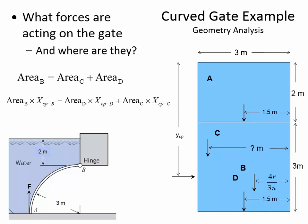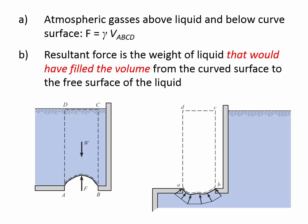One final concept: if water isn't above a curved surface but is pushing from underneath, you find the weight of the water that would be above it up to the water line — essentially the weight of the volume displaced by the gate. The upward hydrostatic force equals the weight of the water displaced. It's not only the water actually above the gate, but the water that could be above it if the shape were displacing something.